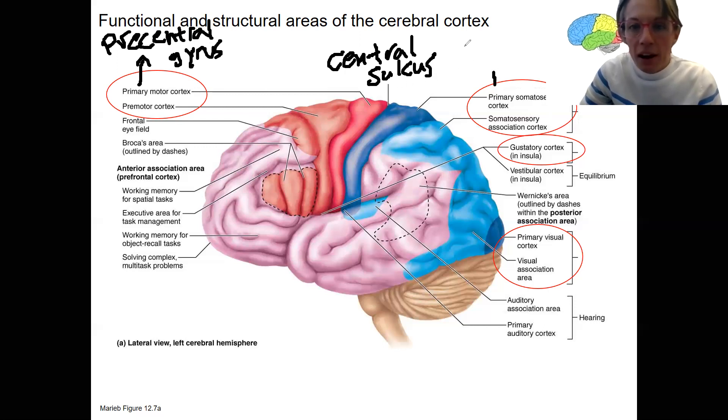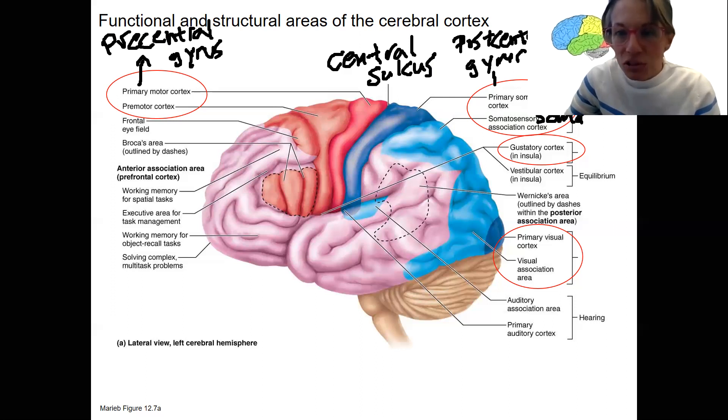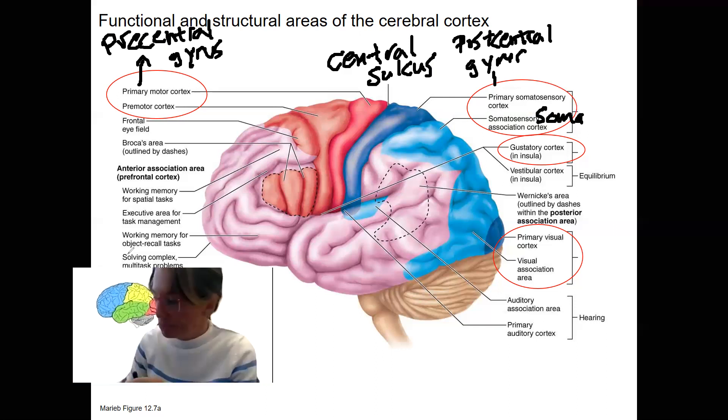Behind the central sulcus, we have that post-central gyrus. And that's where the primary somatosensory cortex is located. The primary somatosensory cortex, along with the somatosensory association cortex, those together are going to make up the somatic sensory areas. Somatic senses, senses from the bulk of the body.